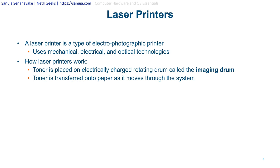A laser printer is a type of electro-photographic printer and uses mechanical, electrical, and optical technologies. How laser printers work is basically there is a toner that is placed on an electrically charged rotating drum called an imaging drum, and the toner is transferred onto paper as it moves through the system. It uses electrical chargers to electronically charge that drum in order to print your document.